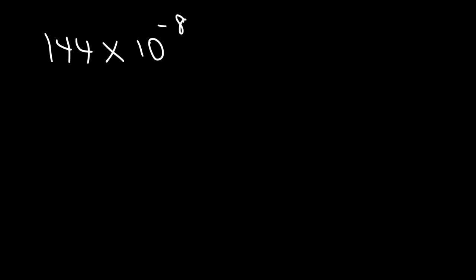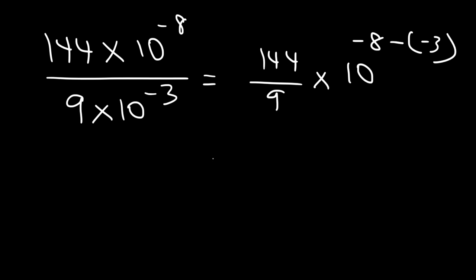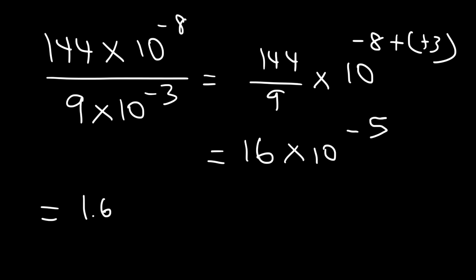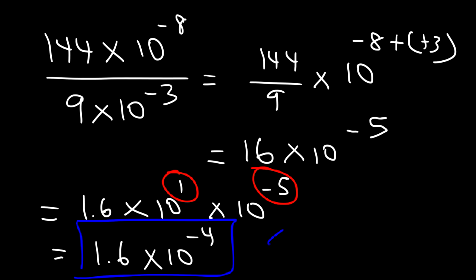Let's try one more example: 144 times 10 to the negative 8 divided by 9 times 10 to the negative 3. 144 divided by 9 is 16, and negative 8 minus negative 3 becomes negative 8 plus 3, which is negative 5. Now 16 is 1.6 times 10, and that 10 is 10 to the 1. So we add 1 and negative 5 to get negative 4. The final answer is 1.6 times 10 to the negative 4.